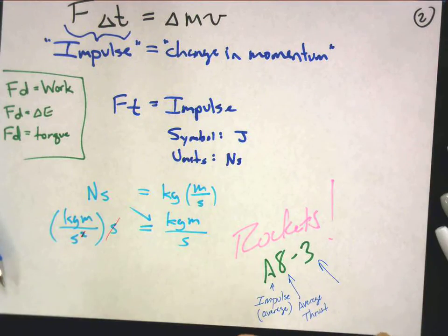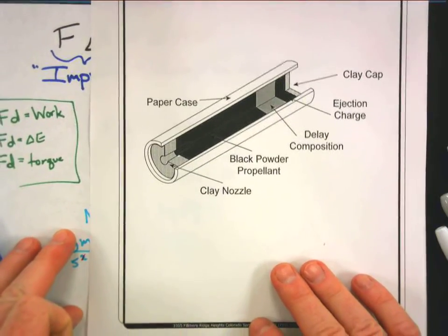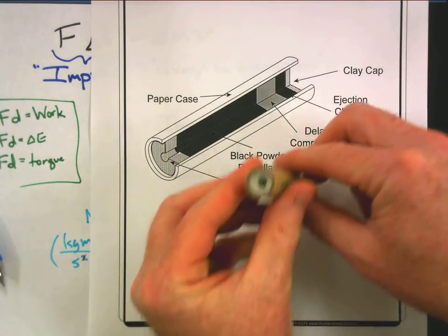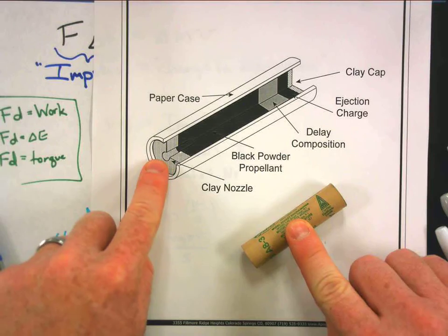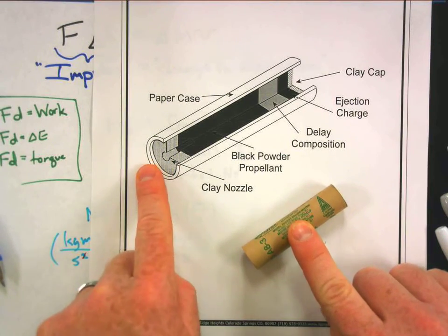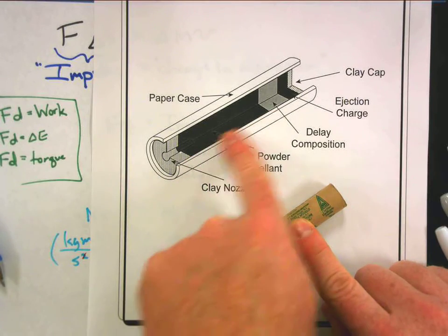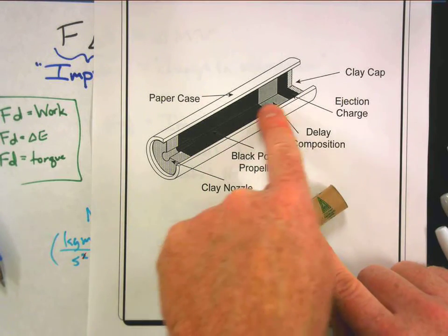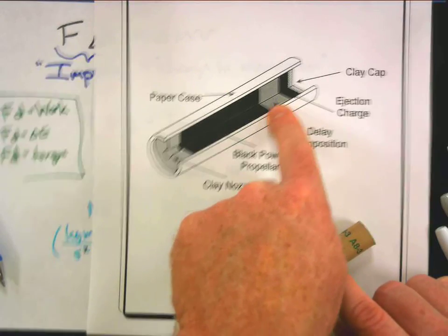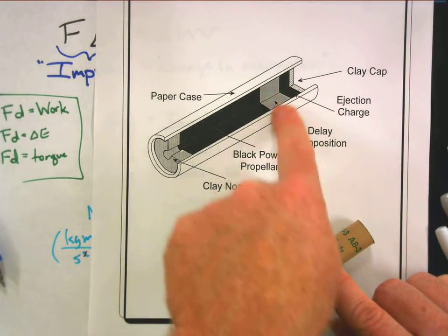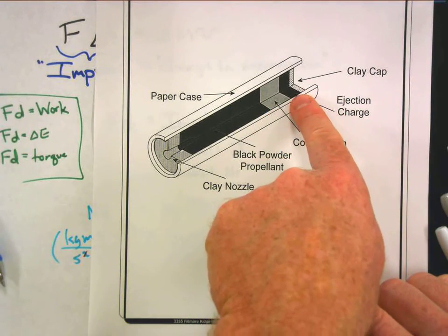The final number, well think about what's going on here with these engines. Inside the engine you essentially have the clay nozzle with the opening in the end, and that's where the hot exhaust gases come out. Then all the fuel, and after the fuel burns up there's a delay charge. So this is burning, but it's not really producing thrust, it's not very powerful. There's not a lot of energy stored in this material, but it is burning.